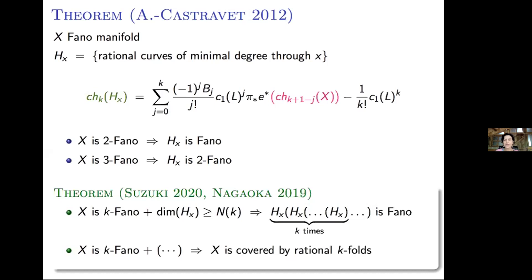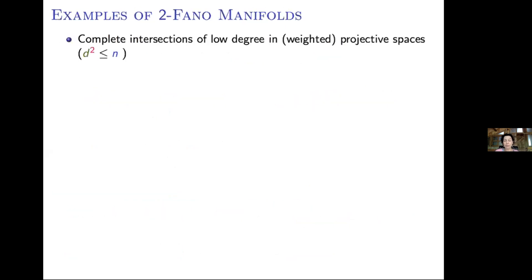Now let me change gears and talk about some limitations of this notion by looking at examples. The first easy example is a generalization of hypersurfaces. In general, if I take complete intersections of low degree in weighted projective space, I get examples of Fano manifolds. For hypersurfaces in P^N, the numerical condition we want is that d^2 ≤ N, and similarly for complete intersections in weighted projective space there is an analogous numerical condition.